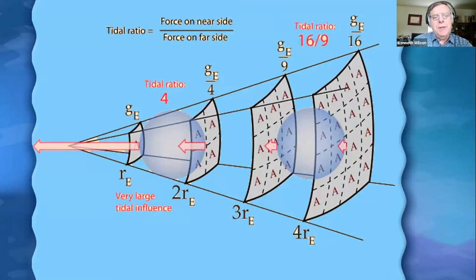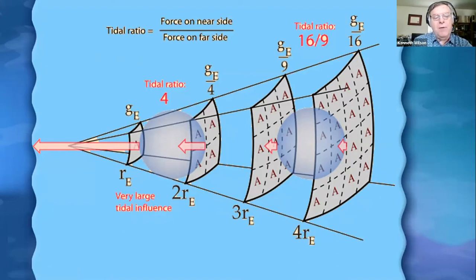What we're talking about with tides is a difference in that intensity — not just the intensity at a certain distance, but a difference. Let's say we have a black hole, a very small intense source of gravity. At a certain distance, we have a certain amount of gravity on the side of the planet closest to the black hole, but on the other side, which is farther away, because of the inverse square law, the amount of gravity per square meter is reduced. If we double the radius, it's reduced by a factor of four. So the tidal ratio in this case is a ratio of four from one side of the planet to the other.